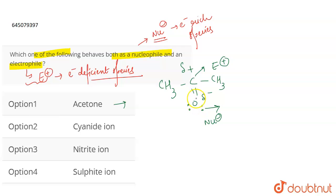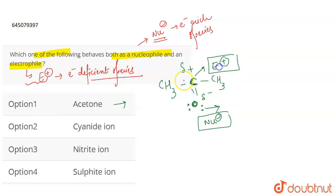Oxygen is going to have a delta negative charge and it has a lone pair through which it can donate, therefore it can act as a nucleophile. Whereas, this carbon has a delta positive charge and therefore it can act as an electrophile — a nucleophile can attack at this position and an electrophile can attack at this position. It means that when oxygen donates, it donates to an electrophile, so acetone acts as a nucleophile because of this oxygen and an electrophile because of the positive charge on the carbon. Therefore, option one — acetone — can act as an electrophile as well as a nucleophile.